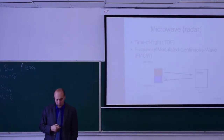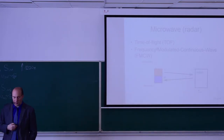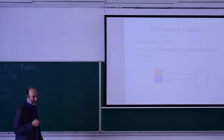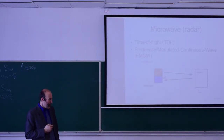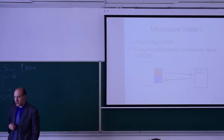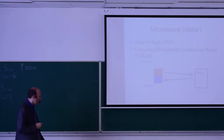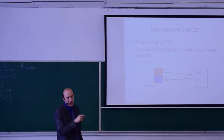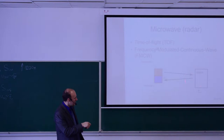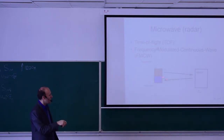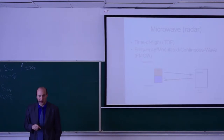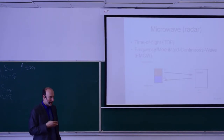There are basically two principles used. One is the measurement based on the time of flight, used especially for longer distances. The second principle is called frequency modulated continuous wave, used for shorter distances. In both cases you have a transmitter sending either a pulse or a continuous wave, and an object reflecting that wave. The object needs to reflect the radio signal well, and you need to select a suitable frequency range where the echo would be best.